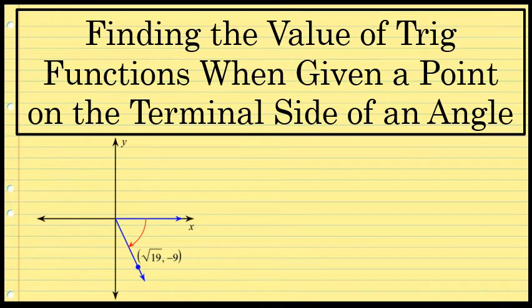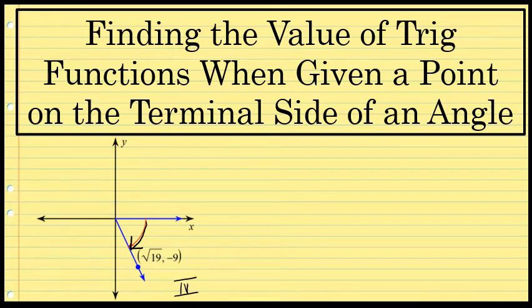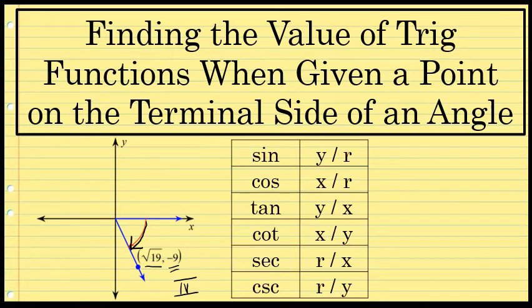Here you can see a fourth quadrant angle. The measure of the angle isn't given, but it is a negative angle located in the fourth quadrant. A point on the terminal side of the angle is given — that point is (√19, -9). This is enough information to determine the value of the six trig functions at that angle. To find the value of these trig functions, you'll need to know the trig ratios in terms of x, y, and r.